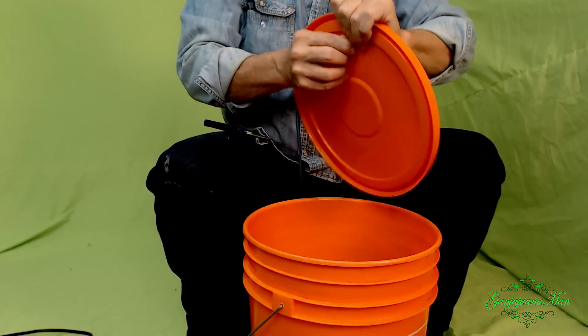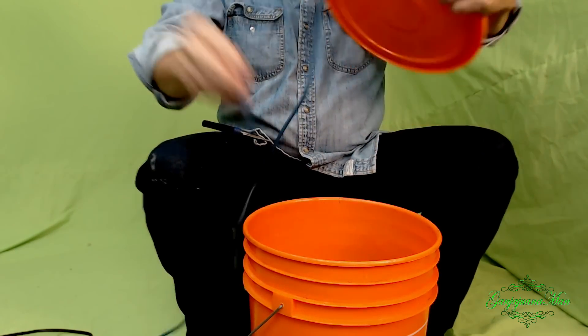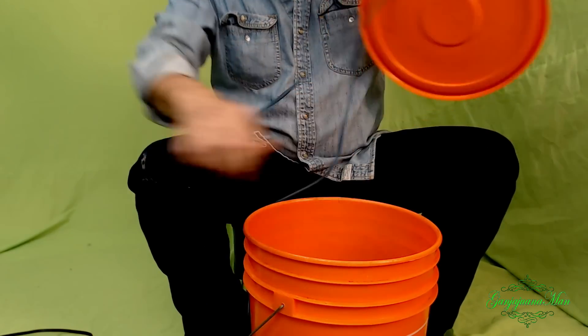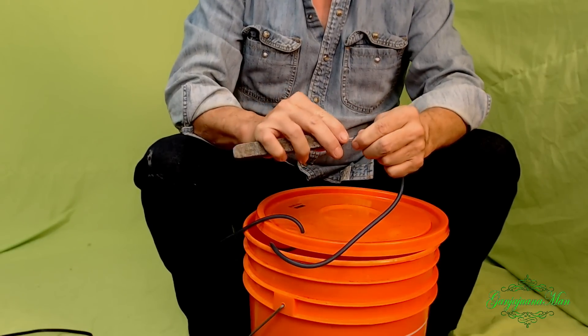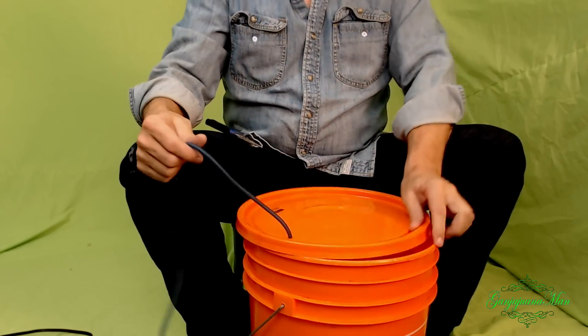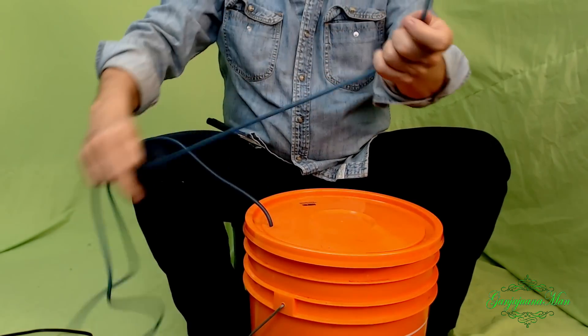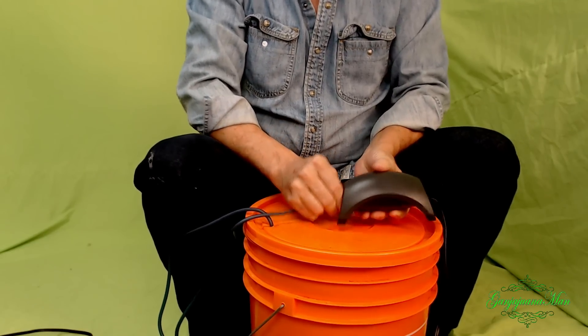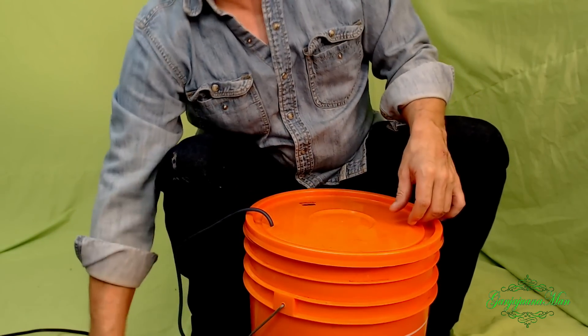Now this hose, I want it to reach the bottom of the bucket, so like that, and that's plenty. This is where we put our air stone. Air stone's in there, so this end gets plugged into the air pump. Simple enough so far.